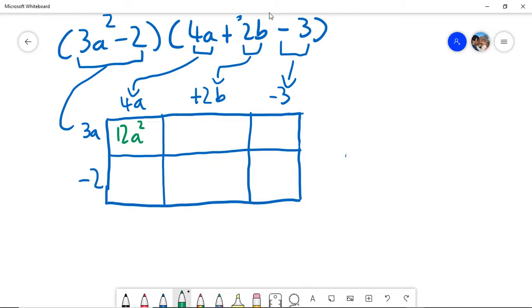3a times 2b. 3 times 2 is 6. A times b is ab. And again, it's positive times positive. 3 times negative 3 is minus 9. And then we've got an a. Minus 2 times 4a is negative 8a. Minus 2 times 2b. Minus 2 times minus 3. That would be positive in this case.